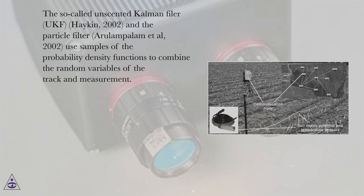The so-called unscented Kalman filter, UKF (Haken, 2002), and the particle filter (Arulampalam et al., 2002) used samples of the probability density functions to combine the random variables of the track and measurement.